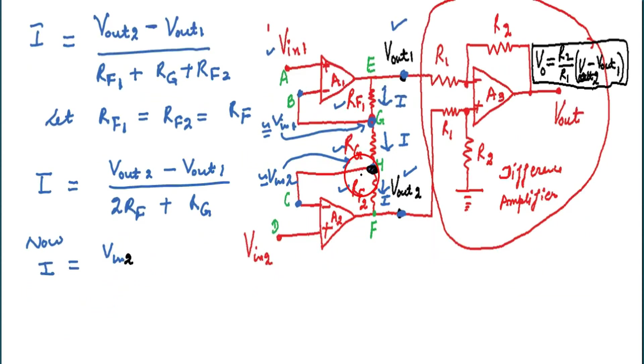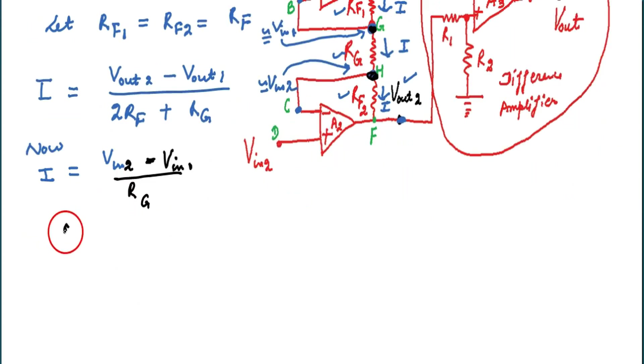The voltage across RG, the points are G and H, and voltage at Vin1 and Vin2. So therefore across RG, the voltage is Vin2 minus Vin1, and current will be voltage difference divided by RG.